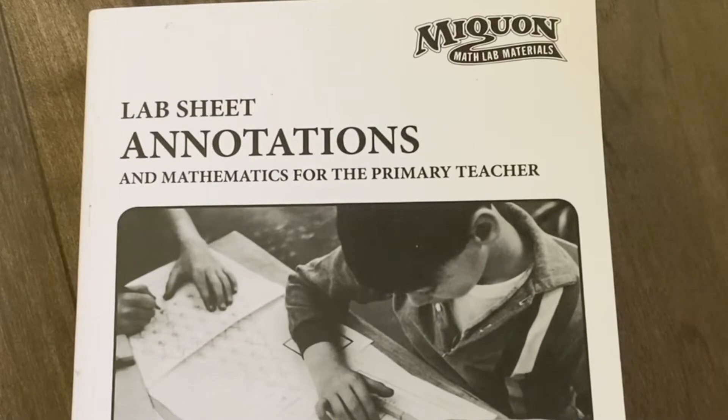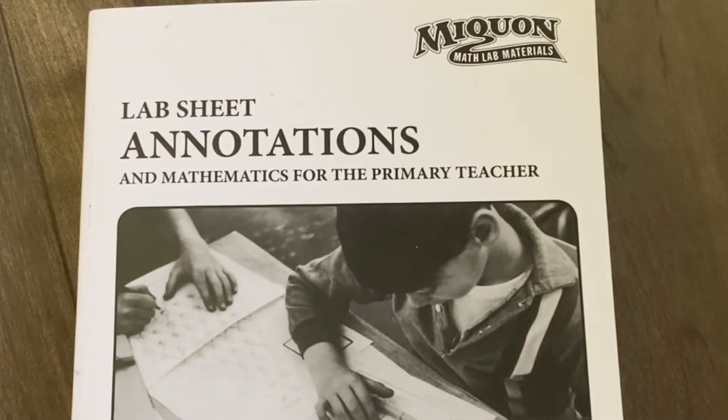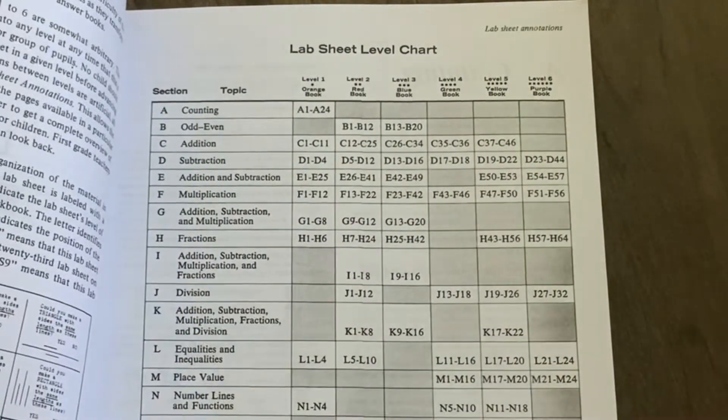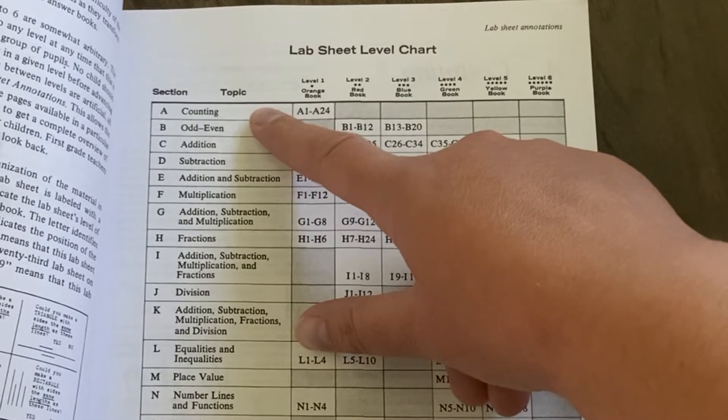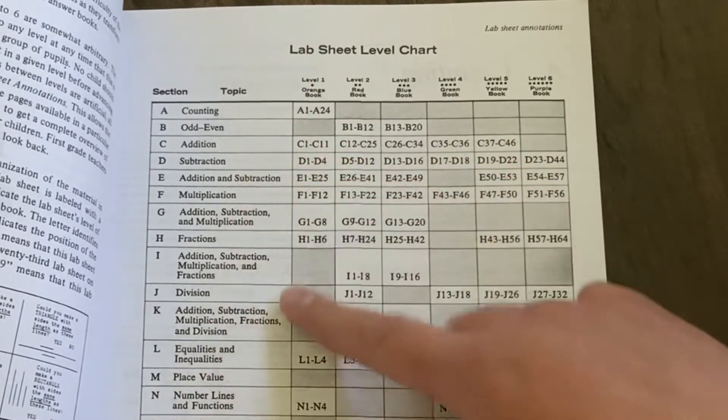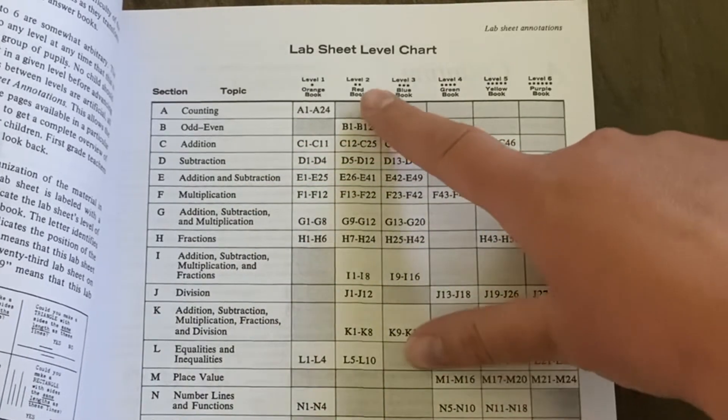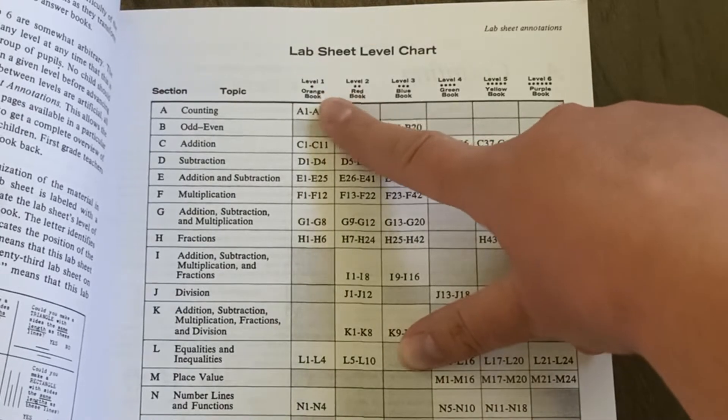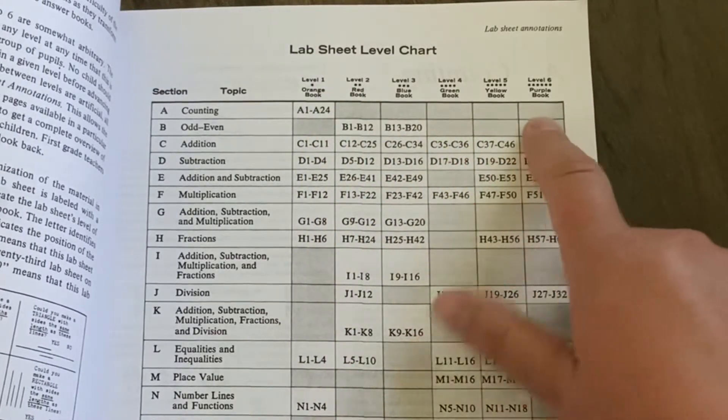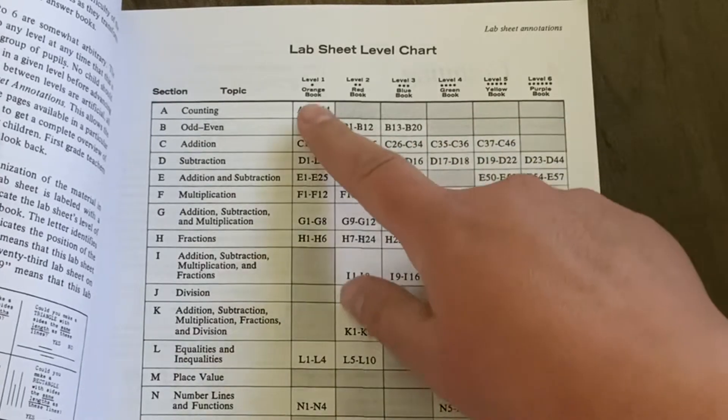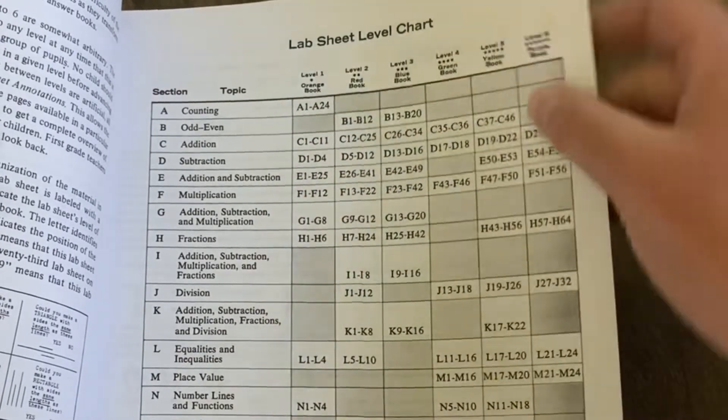As we open up the lab sheet, I will say that this is not the most teacher-friendly material. Some people may like it; this is just not for me. You have the sections—counting, addition—going down. And then over here you have the levels: orange book, red book, blue book, green book, yellow book, purple book.